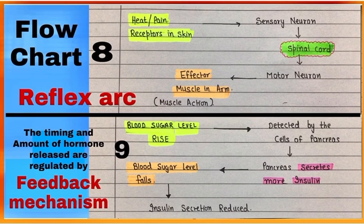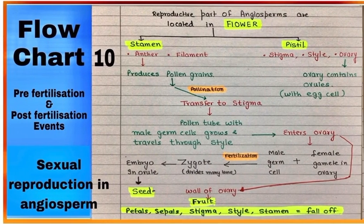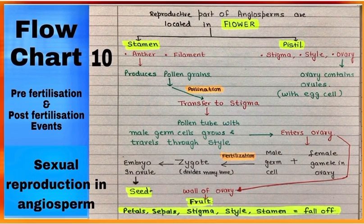Flowchart number nine is showing the feedback mechanism used to regulate the timing and amount of hormone released from endocrine glands. Flowchart number ten is showing pre-fertilization and post-fertilization events in sexual reproduction in angiosperms.